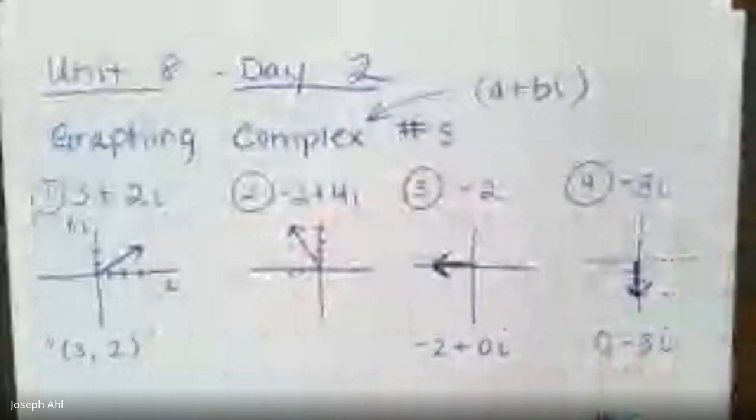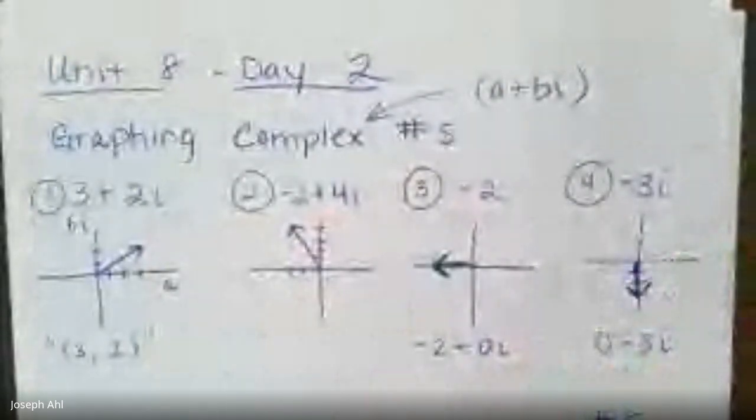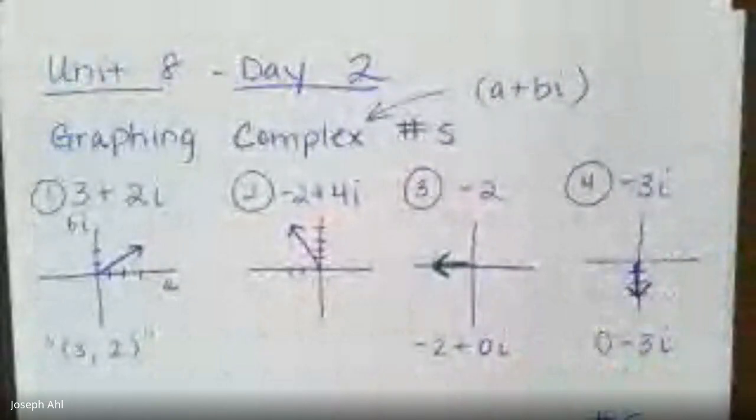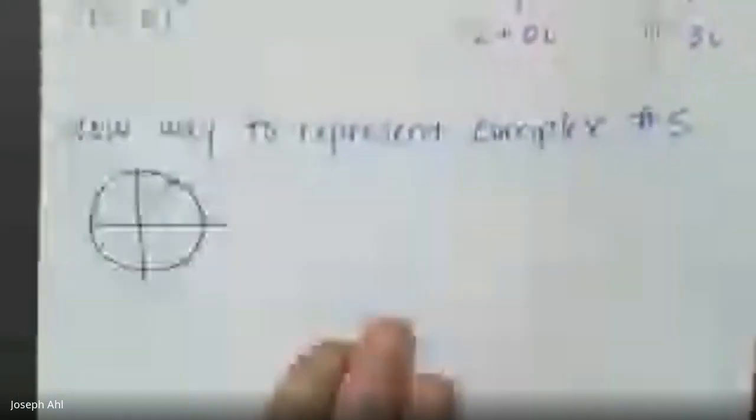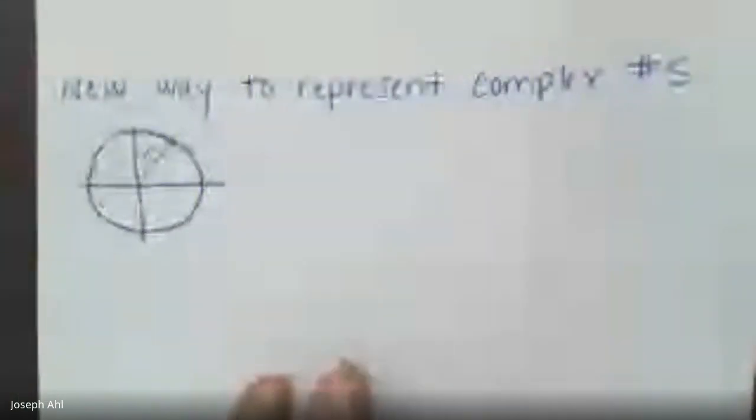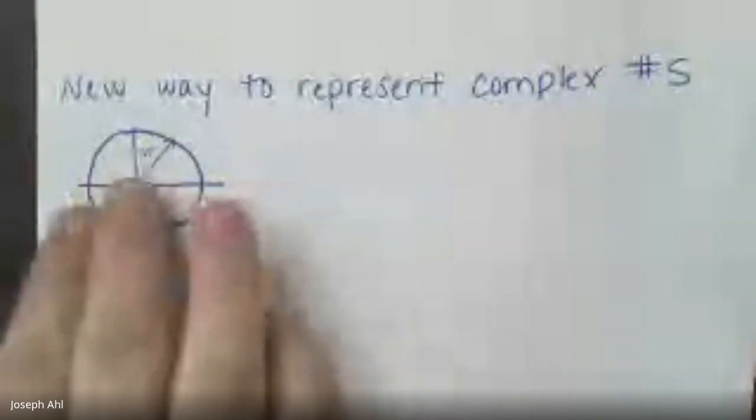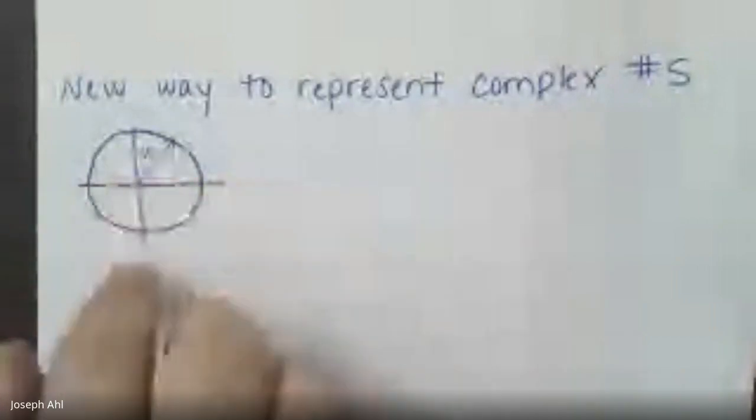So we're going to eventually make a lot of connections between why graphing complex numbers are important to us, and we're going to learn right now, actually, how to represent complex numbers in a completely new format. And it's going to take us a few days to build why this is actually important to us. But for now, just follow along with me here. For any way to represent complex numbers, you'll need a circle drawn on a set of coordinate axes. And we're going to say that this is in the complex plane. We've got the A axis. This is the BI axis, just like we saw up above.